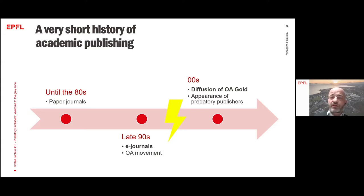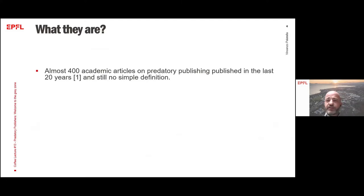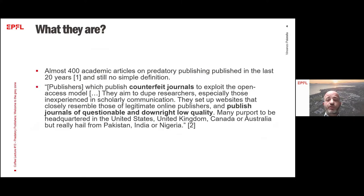So suddenly there was a cheap opportunity to make money just by uploading articles on the web and leveraging the publish-or-perish principle. This is how the first predatory publishers appeared. But what is a predatory publisher? Well, this is not an easy question to be honest. In the last 20 years, almost 400 academic articles have been published on this topic without reaching a consensus, not even around the label itself — 'predatory publisher.' The first one who tried to define this issue is Jeffrey Bell, probably the pioneer in this particular field and also the creator of a very well-known and controversial list of predatory publishers.